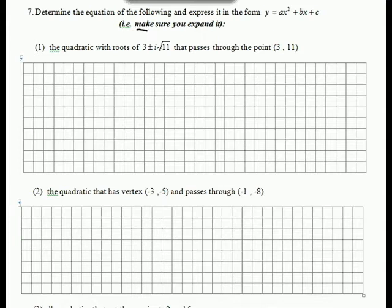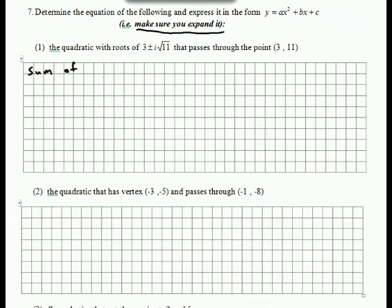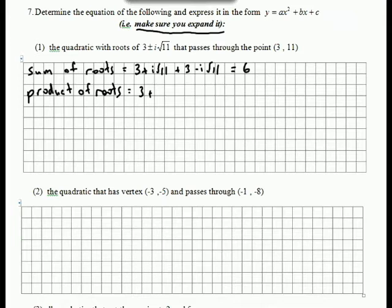Question 7. We wrote in bold: make sure you expand. You need to read the questions carefully. If we have complex roots as we have here, don't do x take one, x take the other as your factors. Use the sum and the product of the roots. So we end up with the i√11 terms cancelling out, and 3 plus 3 being 6.